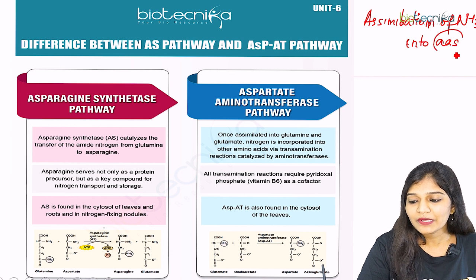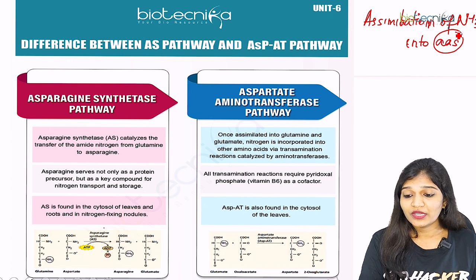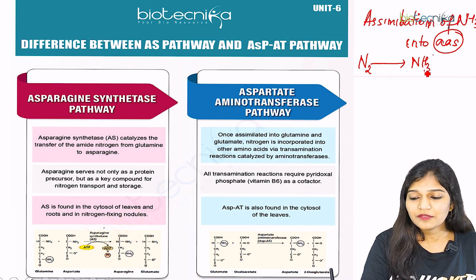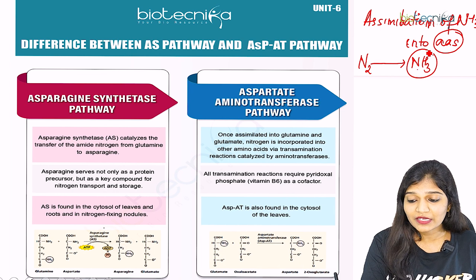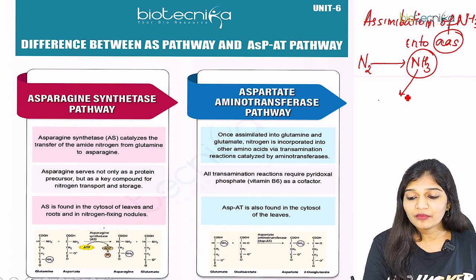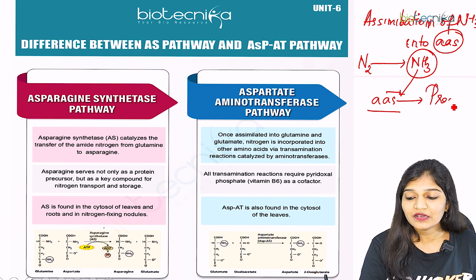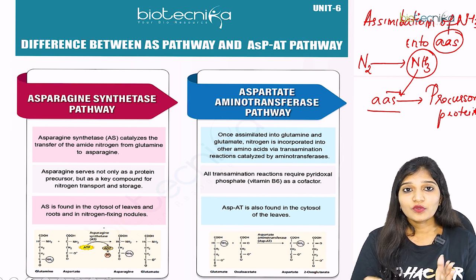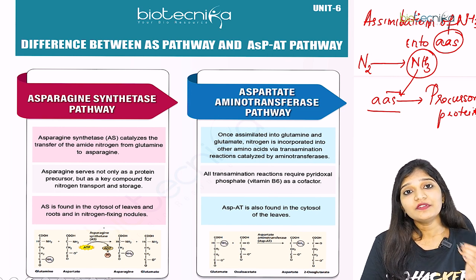A plant needs a nitrogen source to make an amino acid. Nitrogen is fixed as ammonia inside the plant, specifically in the case of symbiotic nitrogen-fixing bacteria. This ammonia is converted into amino acids, which act as precursors for making proteins. Some of the amino acids will also be stored. These two pathways are about what happens after ammonia is formed.